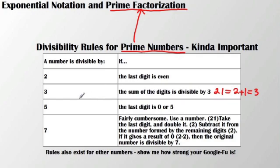A number is divisible by 5 if the last digit is 0 or 5. When we get to 7, it's kind of confusing — there are a lot of steps to it. Let's use the number 21. I'm going to take the last digit, which is 1, and double it to get 2. Then I'm going to subtract that 2 from the number formed by the remaining digits. The remaining digit from 21 is 2. I subtract 2 from 2 and get a result of 0. Because it gives a result of 0, the original number is divisible by 7.